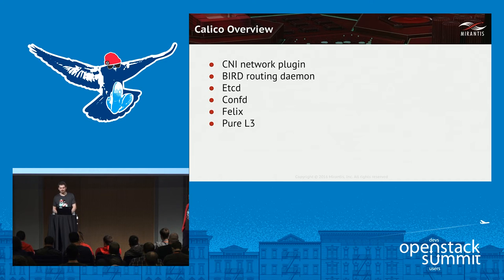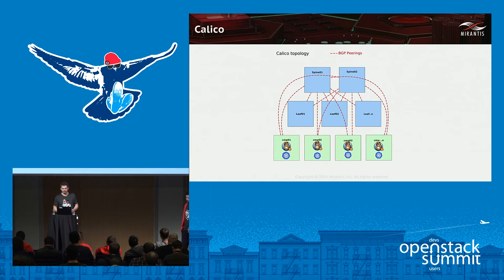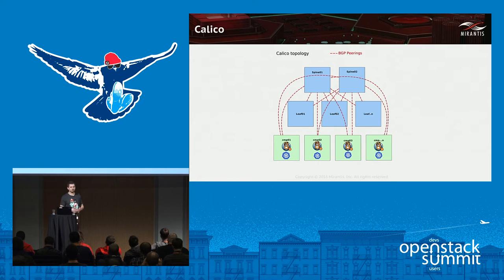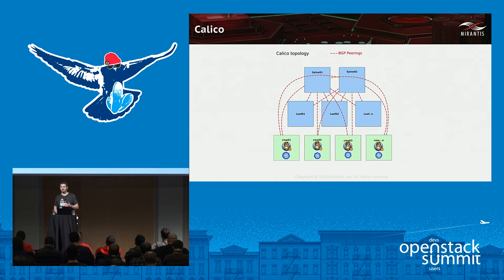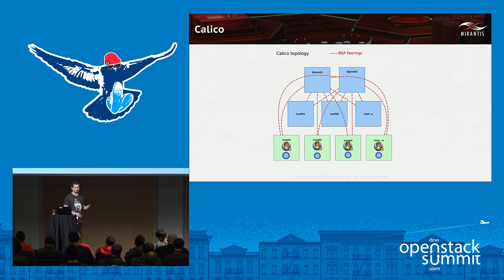Calico is a pure Layer 3 solution — only routing, no encapsulation. It assigns a slash-whatever network to each node and provides a /32 host-network route to each container. Routing information is distributed via BGP. By default, Calico uses a full-mesh BGP network, which is not ideal for production or scale: with 100 servers you end up with 100 BGP sessions per server, and with 1,000 servers you get 1,000 BGP sessions per server.